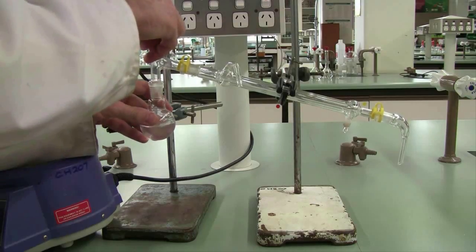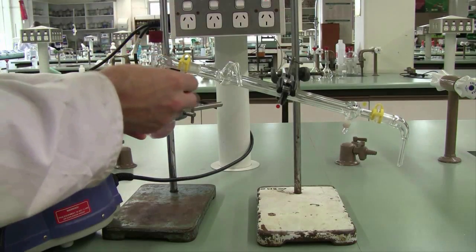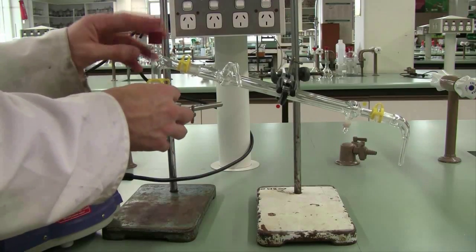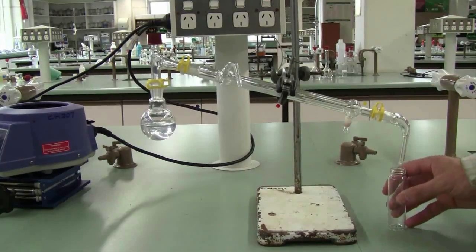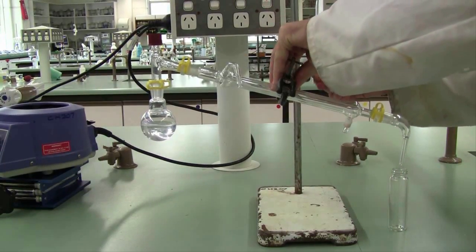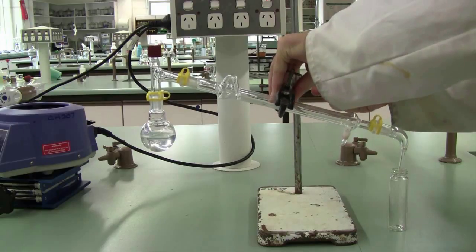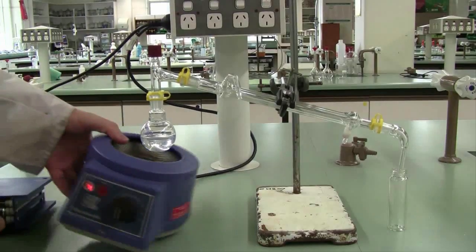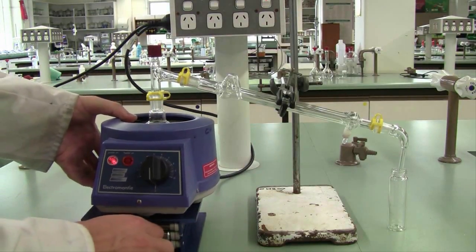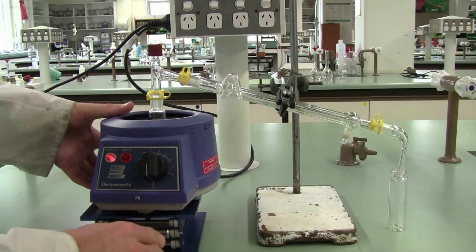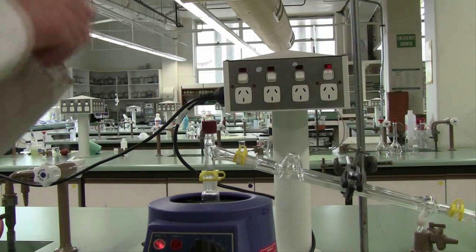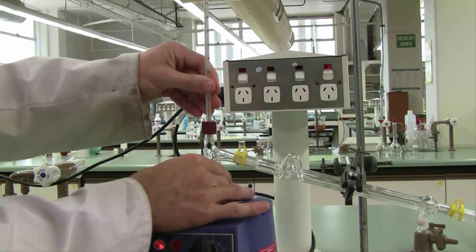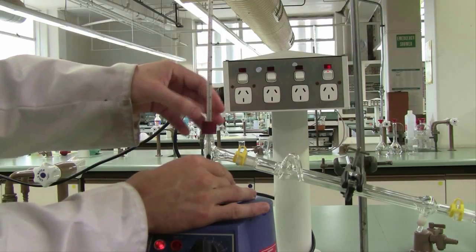Attach the round bottom flask to the still head. Use a yellow clip to make sure it's held firmly in place. Pop a sample collection vial under the receiver and then adjust the height of your entire apparatus such that the tip of the receiver is just below the height of your sample flask. Once that's all in place, you can bring over your heating mantle and use an adjustable platform to adjust the height so that it snugly fits around the round bottom flask. Get your thermometer and place it through the still head. You want the tip of the thermometer to be just below the height of the sidearm, ever so slightly lower like so.